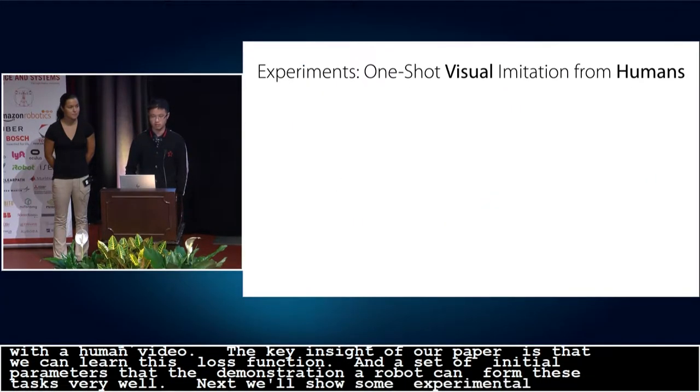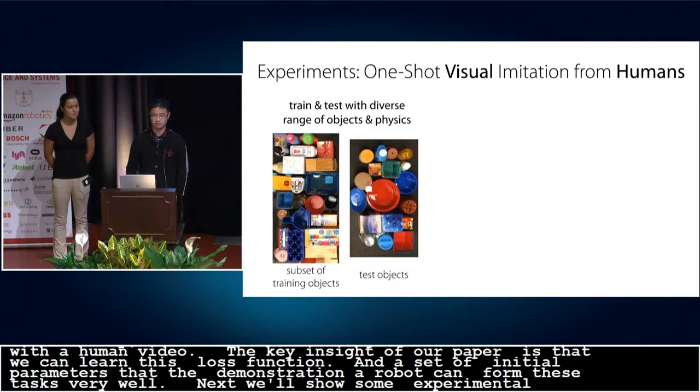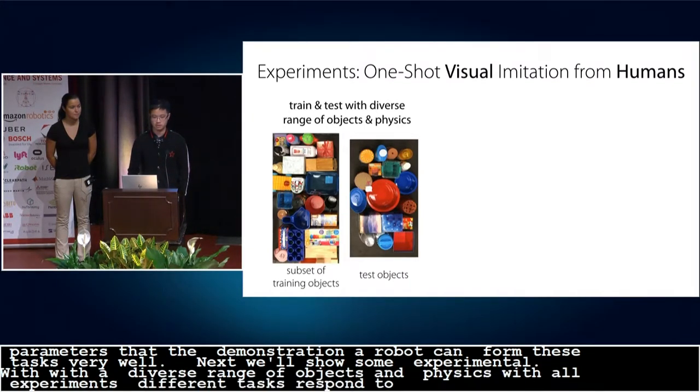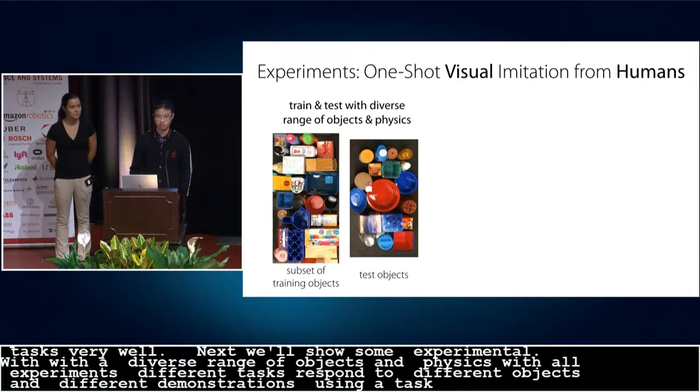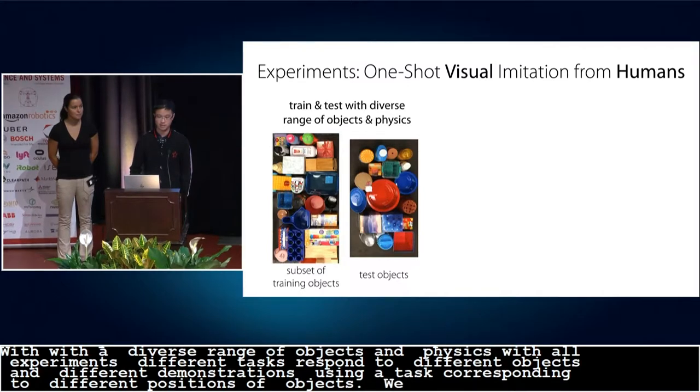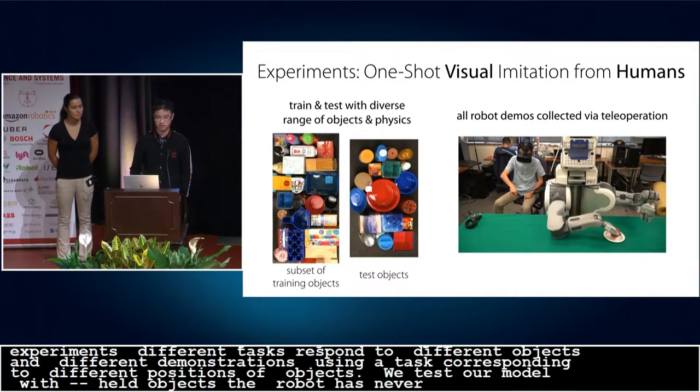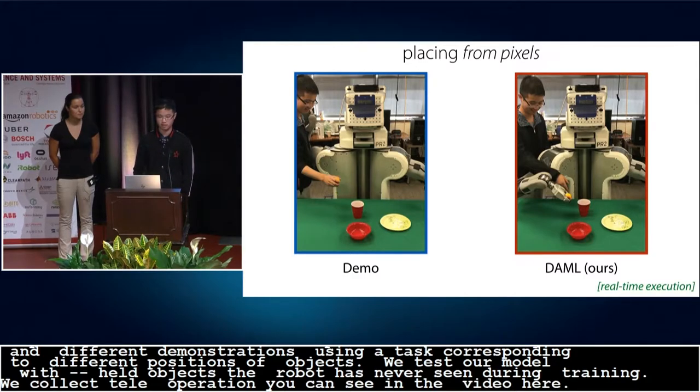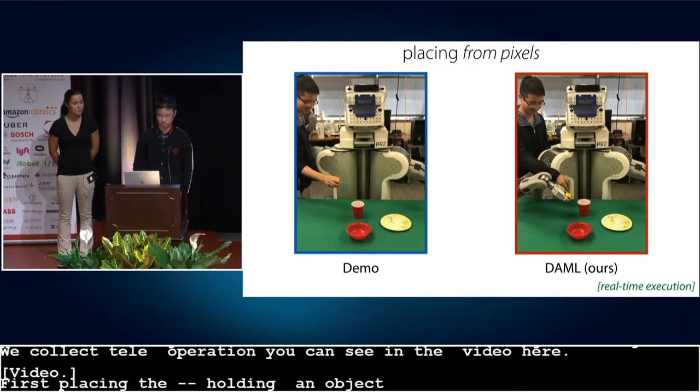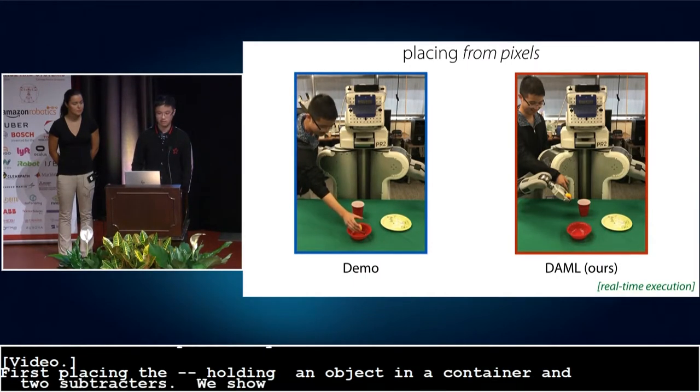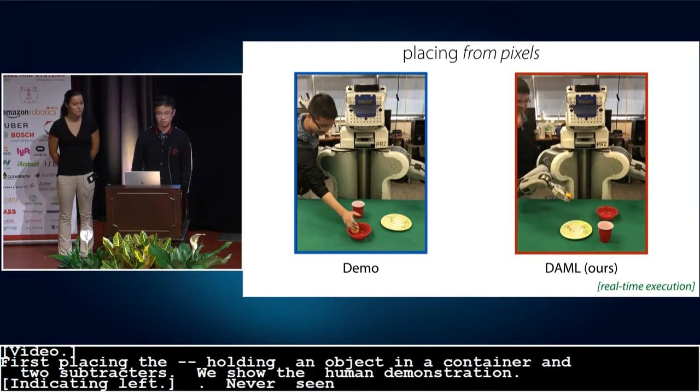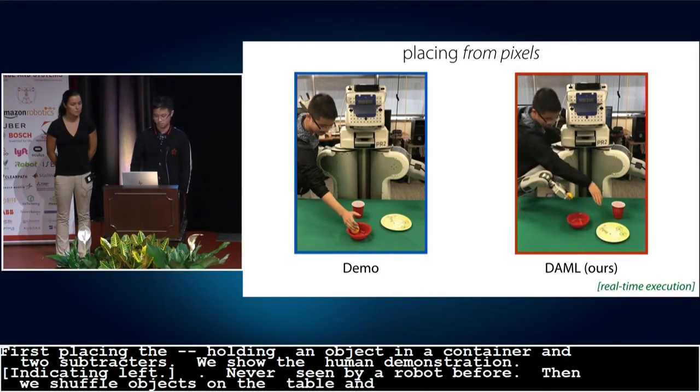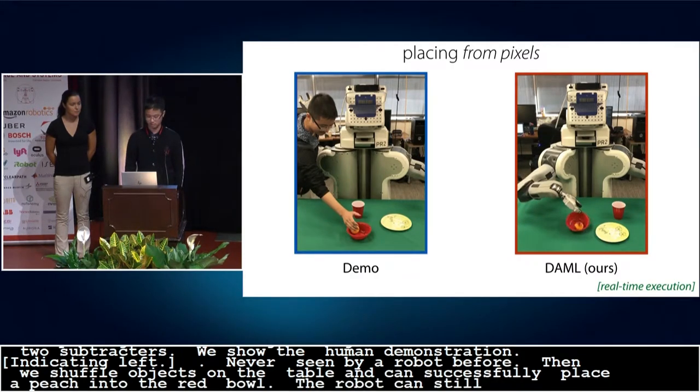We train our model with a PR2 robot and with a diverse range of objects and physics. For all experiments, different tasks correspond to different objects and different demonstrations within a task correspond to different positions of objects. We test our model with all held out novel objects that the robot has never seen during training. We collect our robot demonstrations via teleoperation, as you can see in the video here. So first, we show a placing experiment where a robot needs to place a holding object into a target container amid two distractors. We show a human demonstration on the left. Note that all objects are never seen by the robot before. Then we shuffle objects on the table, and the robot can successfully place a peach into a red bowl. We shuffle objects again, and the robot can still complete that task quite well.